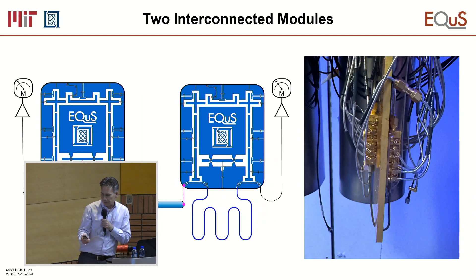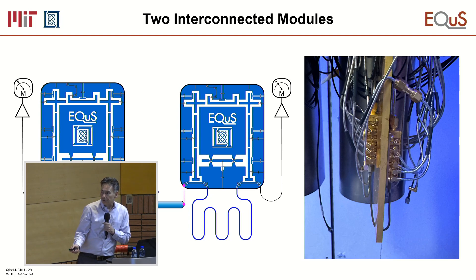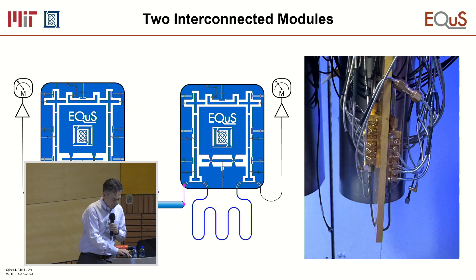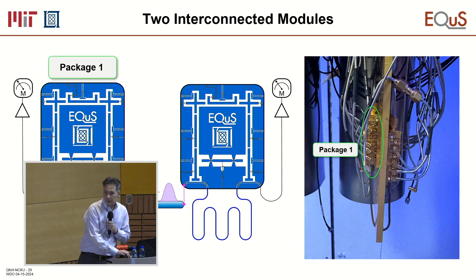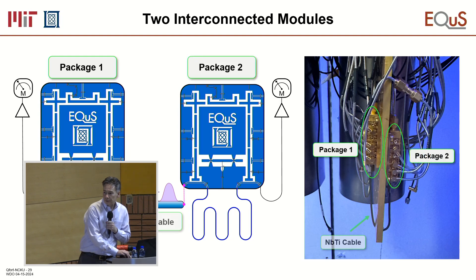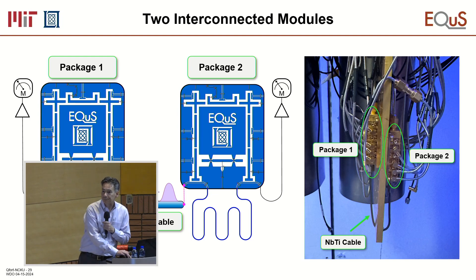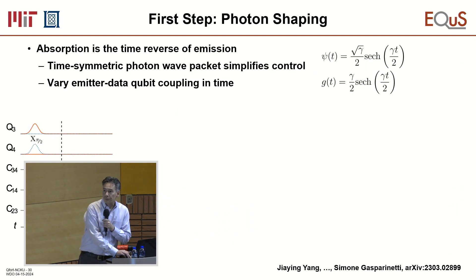The first experiment we did uses just two chips, each in their own package. Here is one package, here is the other, connected by a coax cable. We send a photon from left to right and from right to left. There's package one, package two, and a niobium titanium coax connecting them.